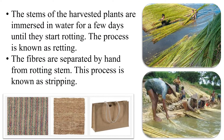The jute plants are harvested at the flowering stage. Stems of jute plants are bundled and kept in slow running water for a few days. During this time, the fibers become loose from the stem and can be easily separated. This process of extraction of jute fiber from the stem is called retting. The fibers are then separated from the rotting stem by hand, and this process is known as stripping.